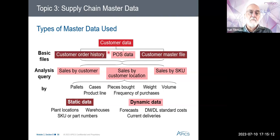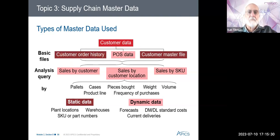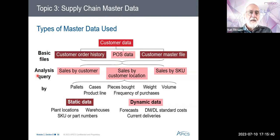Dynamic data is changing on a minute-by-minute basis as people are buying products and we're depleting inventory. The customer master file is static, and then we have the customer order history, which is appended every time a customer buys something. We can then do analysis and queries on those files — looking at what a customer purchased over a period of time: sales by customer, by customer location, or by a particular SKU.